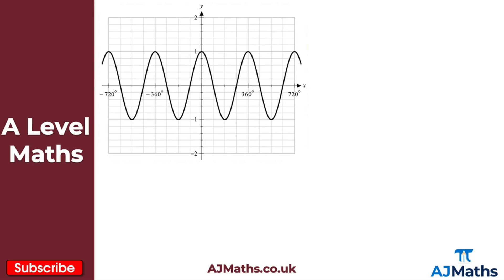Now let's take a look at y equals cos x. Notice it looks very similar to y equals sine x. Just like sine x, y equals cos x repeats every 360 degrees, and it also crosses the x-axis at a number of different points — minus 90 degrees, 90 degrees, 270 degrees, and so on.